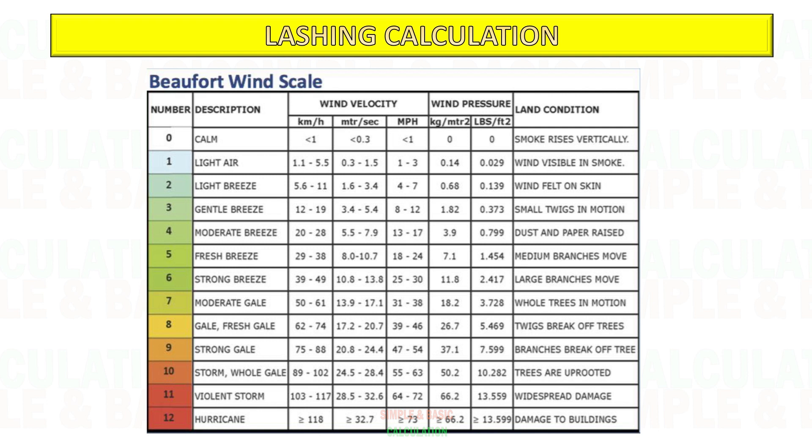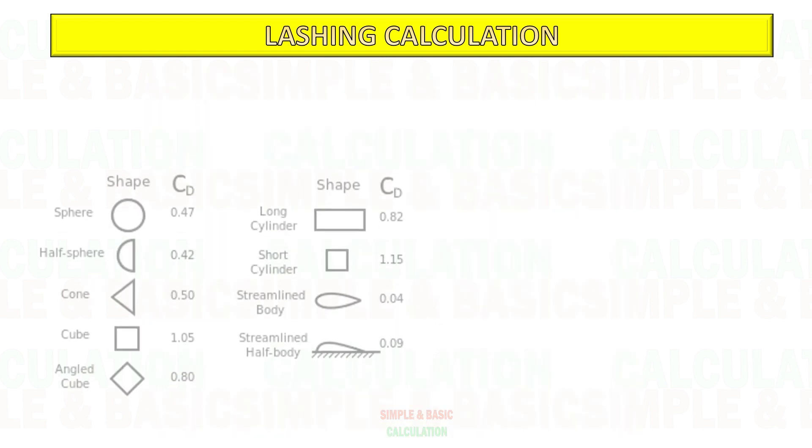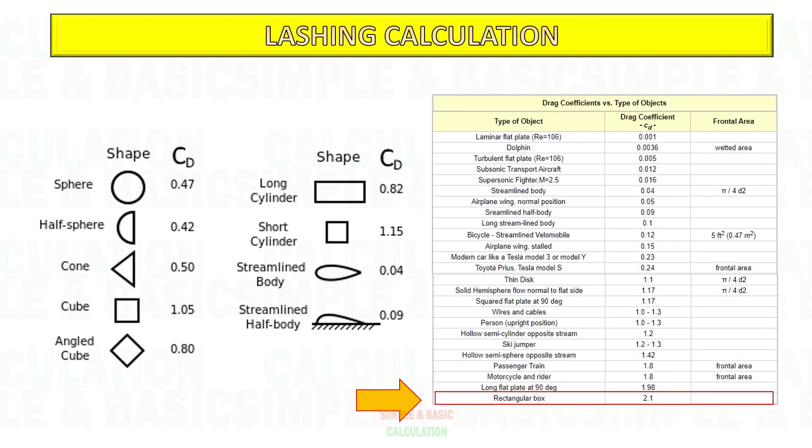This is Beaufort wind scale table. For this calculation, I consider the wind velocity is categorized as strong breeze. This is shape drag coefficient. Based on the shape of the cargo, select the corresponding coefficient value on the table.